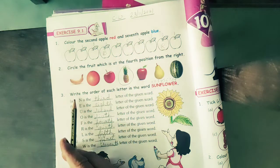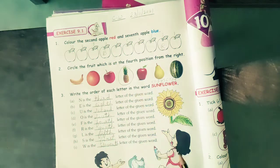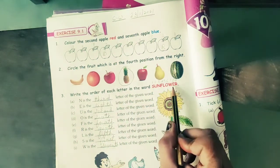Now come to question number 3. Write the order of each letter in the word. This is the spelling of sunflower.